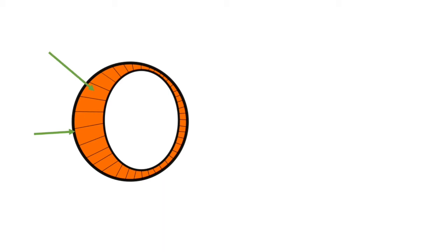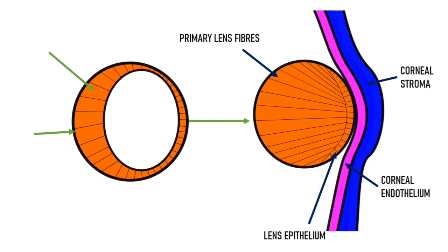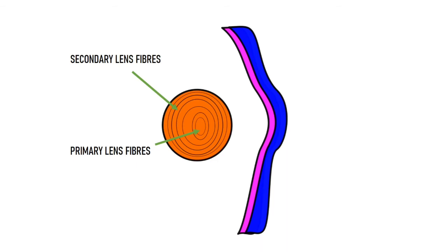At this point, the lens vesicle is made up of a single layer of columnar cells enveloped within an outer basement membrane, which will later become the lens capsule. After the 10-millimeter stage, cells at the posterior part of the lens vesicle elongate toward the anterior end, filling the lumen to form the primary lens fibers, which become the embryonic nucleus. Cells in the anterior portion give rise to the lens epithelium, and with further development, secondary lens fibers are formed encircling the primary lens fibers.